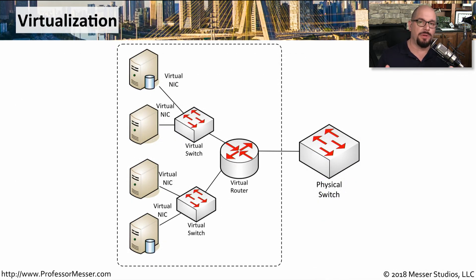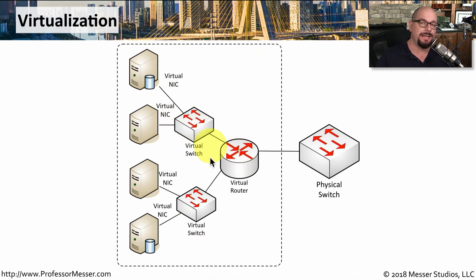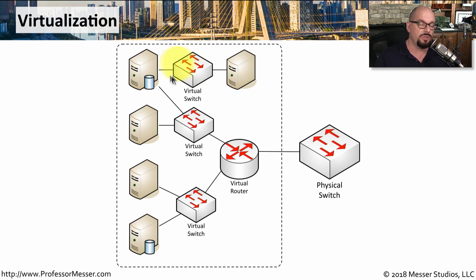Now that all of these servers have been put into a virtual environment, we can also build out switches and routers in this virtual environment as well. Inside this virtual world with hundreds of different servers, there is a link to the outside world that eventually connects to a physical switch. Inside of this virtual world, I've built out a couple of virtual switches connecting to these virtual servers, and I've also got a virtual router that's able to route between these different networks. Because this is a virtual environment, I can make changes at any time just by making a few mouse clicks. I can simply add a different virtual switch to give a server a back-end connection to a separate database server.